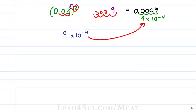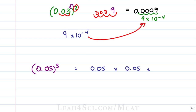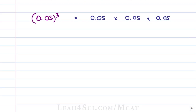Let's try one more complex example where we take the number 0.05 and raise it to the third power. The long way looks something like this: 0.05 times 0.05 times 0.05 — this is going to take way too much time for the MCAT, so let's simplify it. We take the exponent onto the number itself. In this case 5 to the third power is 125. How do I know that? 5 to the third is 5 times 5 times 5: 5 times 5 is 25, times 5 is 125.